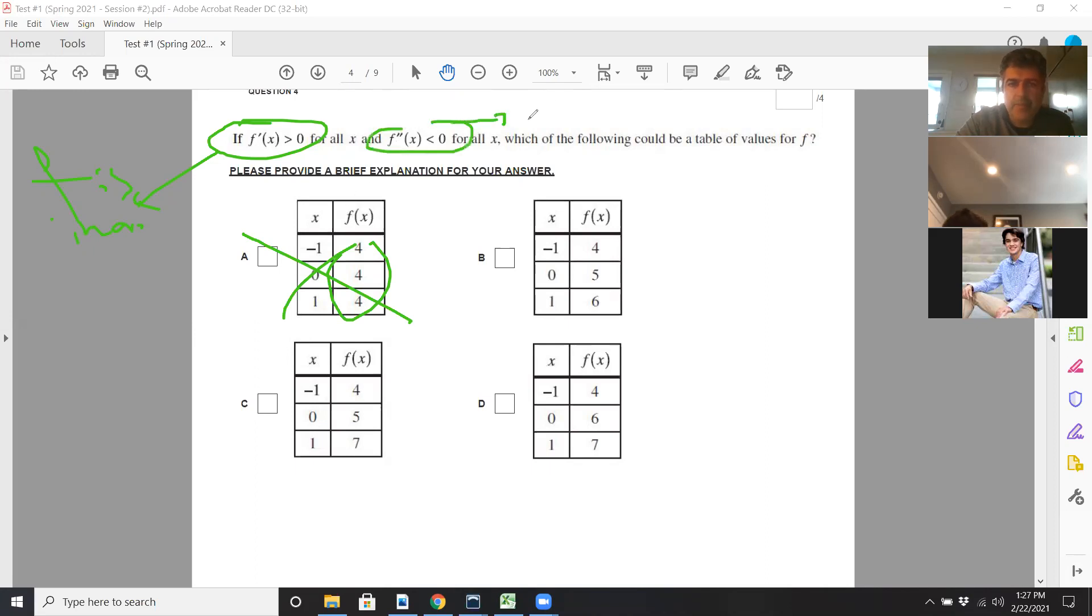This means concave down. So it means that f prime is losing value as x gets bigger. So it means that the curve is doing something kind of like this. That's concave down. Concave up would be more like this.